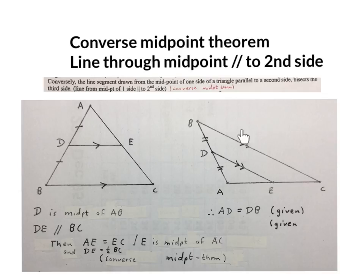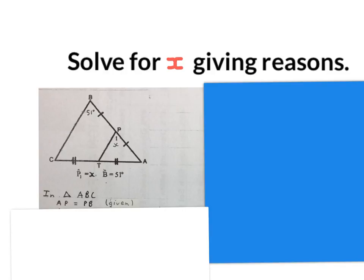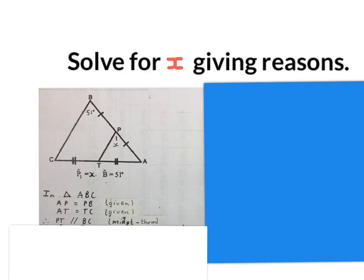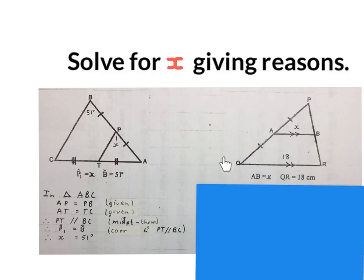Now let's apply these two theorems on two problems. They gave us a triangle; they told us P1 is X and B is 51 degrees. Solve for X, giving reasons. You can see the midpoint theorem applies because they indicated two pairs of equal sides. So we write: in triangle ABC, AP is equal to PB — given; AT is equal to TC — given; therefore PT is parallel to BC — midpoint theorem. Then P1 is equal to angle B — corresponding angles, because PT is parallel to BC. So X is equal to 51 degrees.